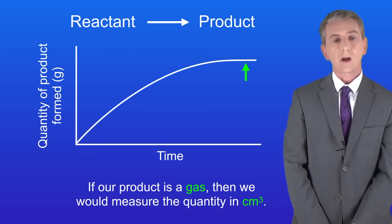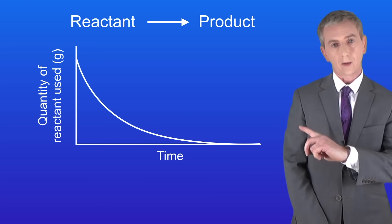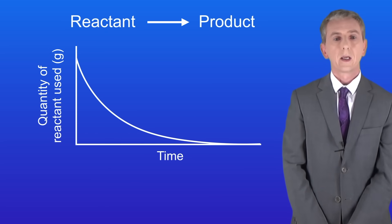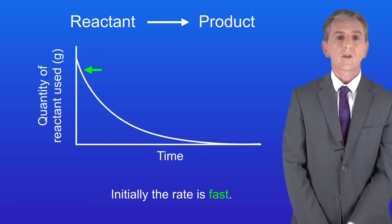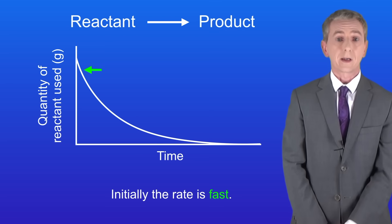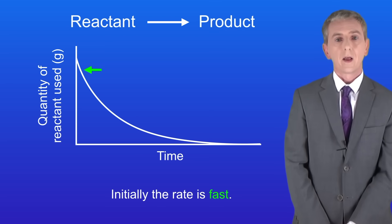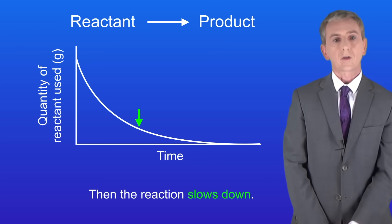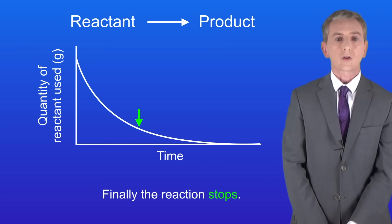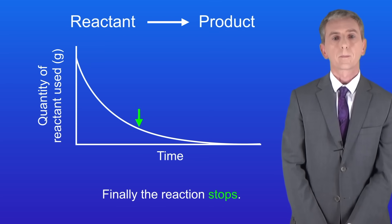In this case the graph looks like this. Again we can see that initially the rate is fast, then the reaction slows down, and finally the reaction stops.